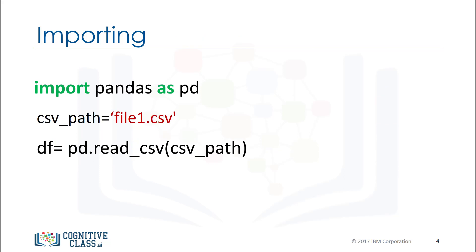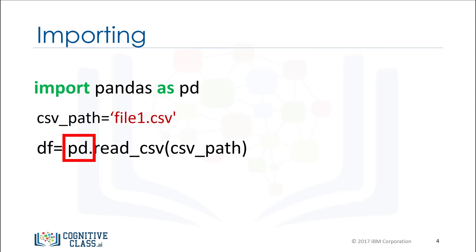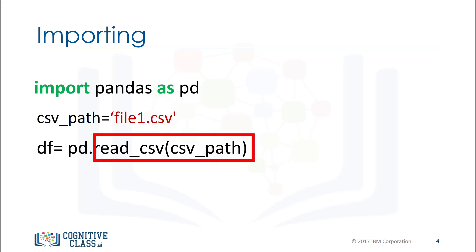Typing Pandas all the time may get tedious. We can use the as statement to shorten the name of the library. In this case, we use the standard abbreviation PD. Now we type PD and a dot followed by the name of the function we would like to use — in this case, read_csv.